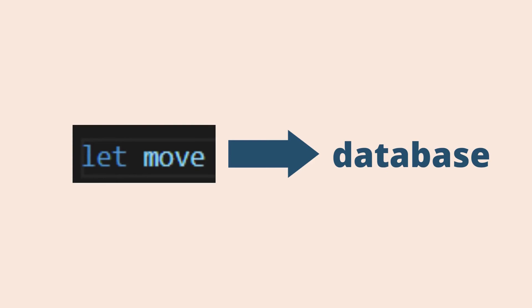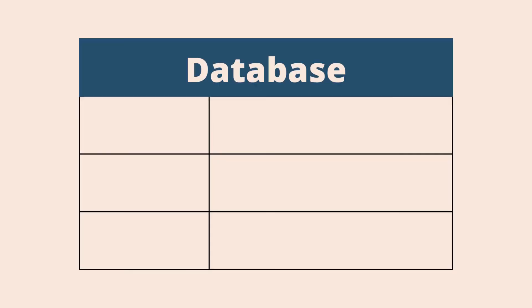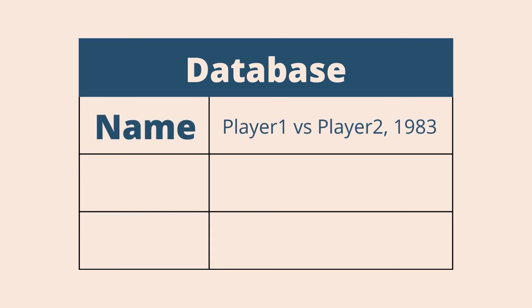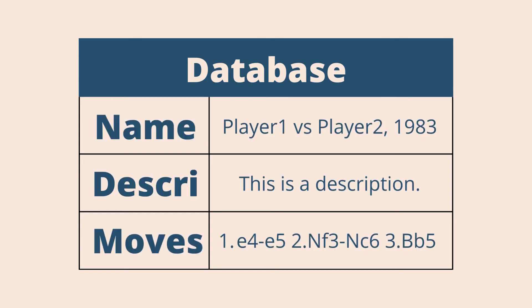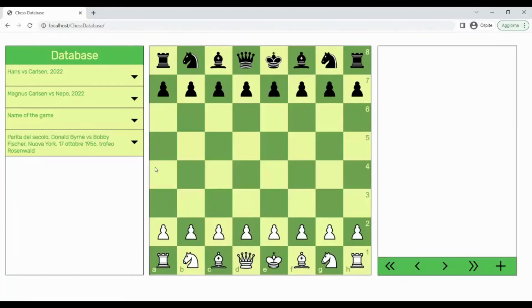So now we can take the moves variable and add it to the database. The database will only contain one table. The table will have three columns: the name, the description, and the moves of each game. And now let's spend the next 17 hours adding games to the database.